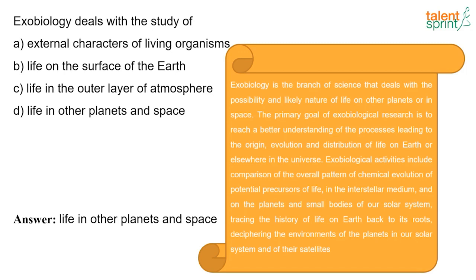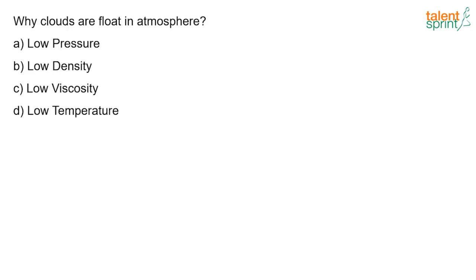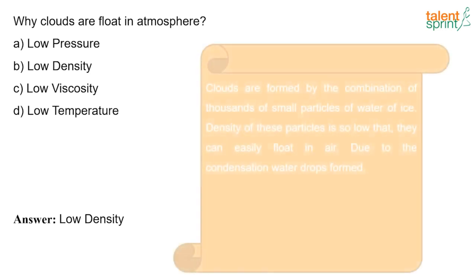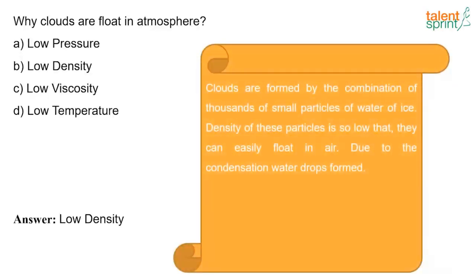Why do clouds float in the atmosphere? The answer is because of low density. Clouds are formed by the combination of thousands of small particles of water or ice; the density of these particles is so low that they can easily float in air. Due to condensation, water drops are formed.